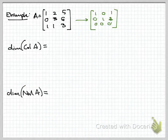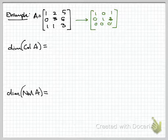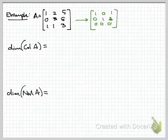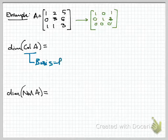Now let's apply dimension to the column space and null space of a matrix. Both are subspaces, and we discussed finding bases for them in an earlier video. Let's revisit an example with a 3-by-3 matrix A, shown in black, with its reduced row echelon form in green. We want to find the dimension of the column space and the dimension of the null space—these are simply the number of vectors in a basis for each.